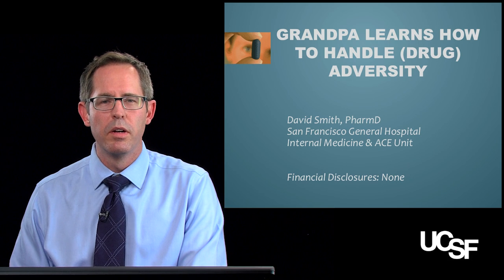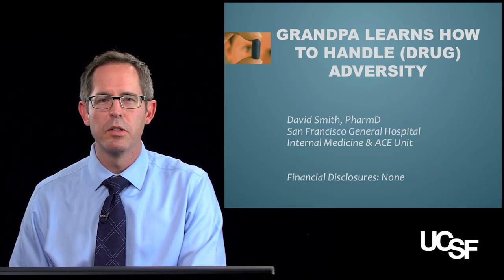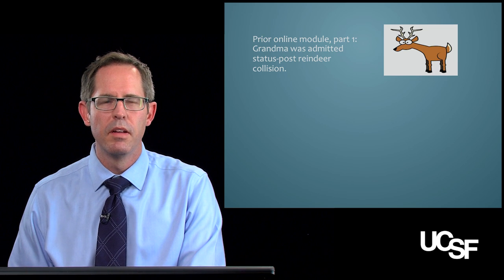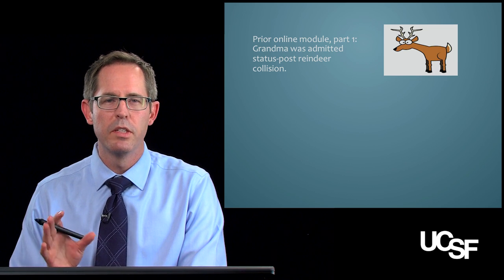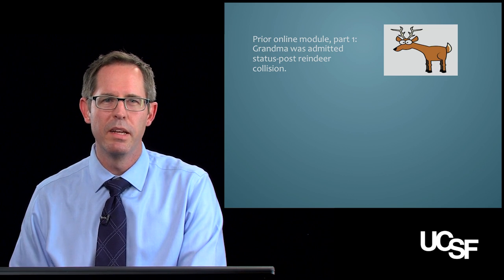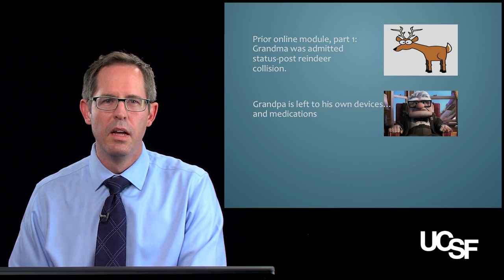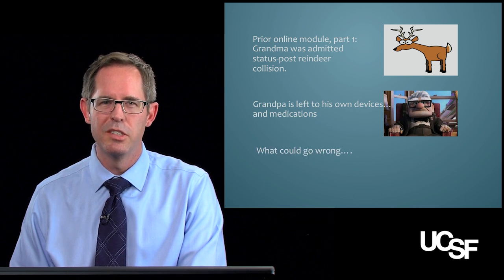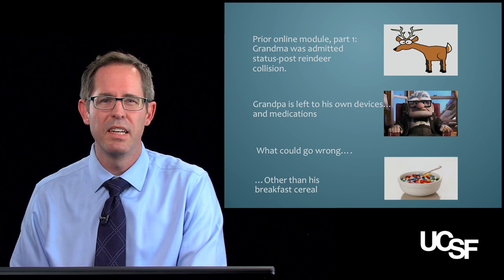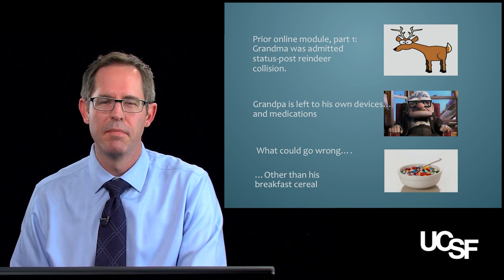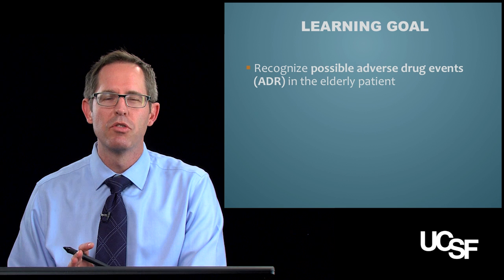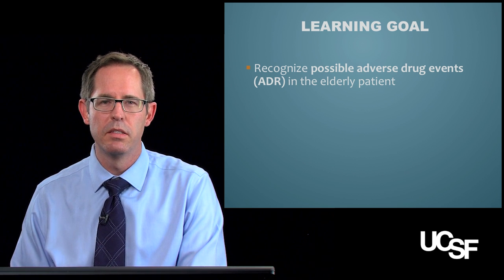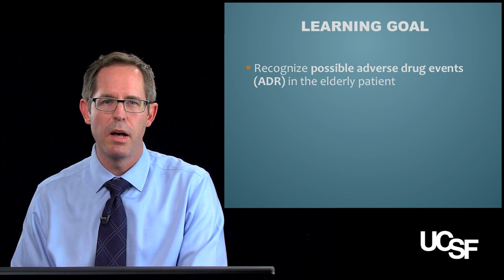Hi, my name is Dave Smith, and we are going on module two. This time we're talking about grandpa. In the first part of this module, part one, we talked about grandma and how she was admitted status post reindeer collision. That left grandpa to his own devices and his own medications — probably nothing could go wrong, right? Until breakfast time. Today we're actually going to talk about how you might start to recognize adverse drug events in your geriatric patient, just like grandpa.